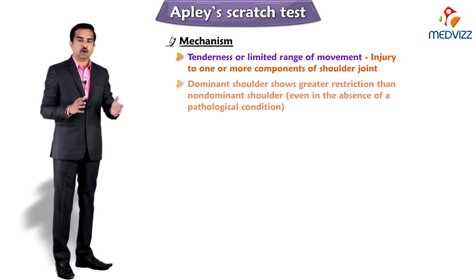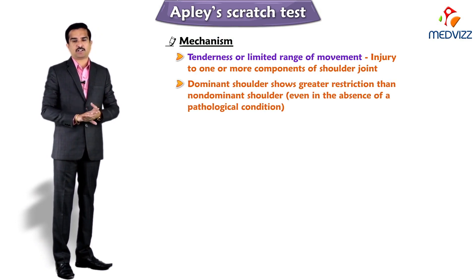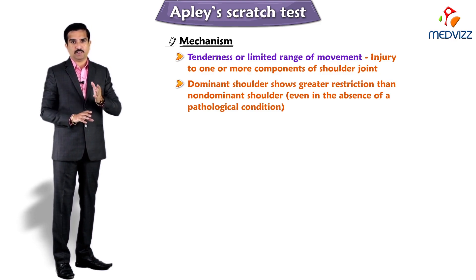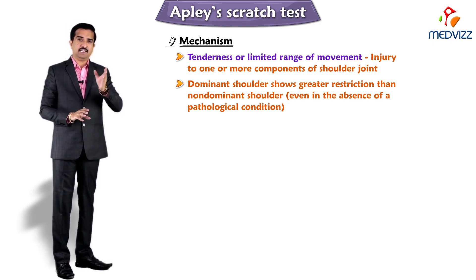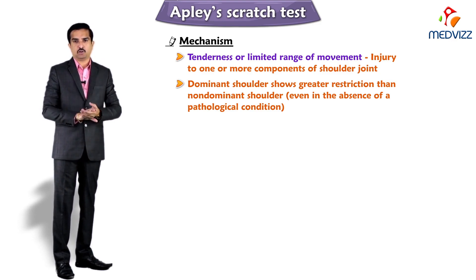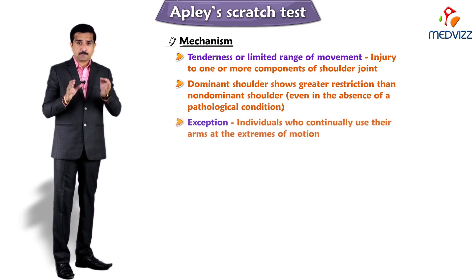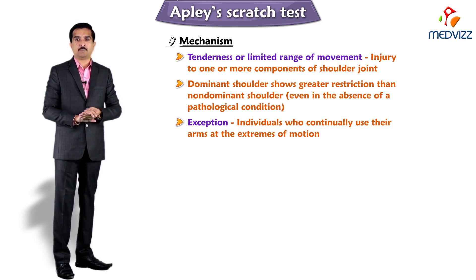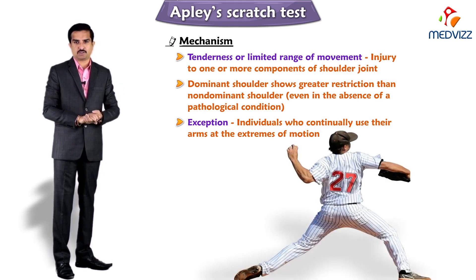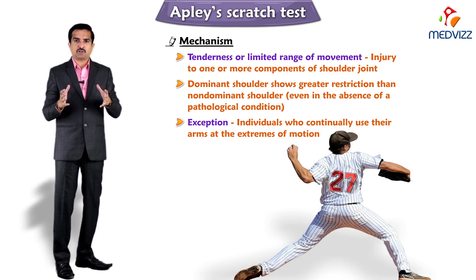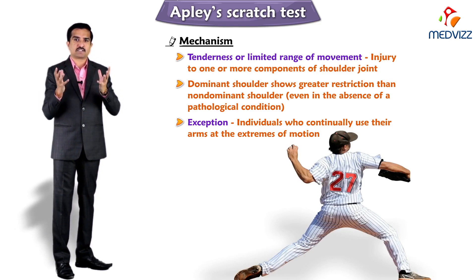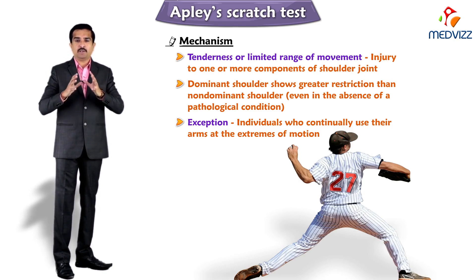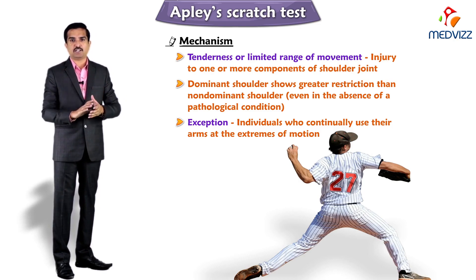Often the dominant shoulder shows greater restriction than the non-dominant shoulder even in the absence of a pathological condition. An exception would be individuals who continually use their arms at the extremes of motion, such as baseball pitchers, because of the extra range of motion developed over time. In these cases, the dominant arm may show greater range of motion.